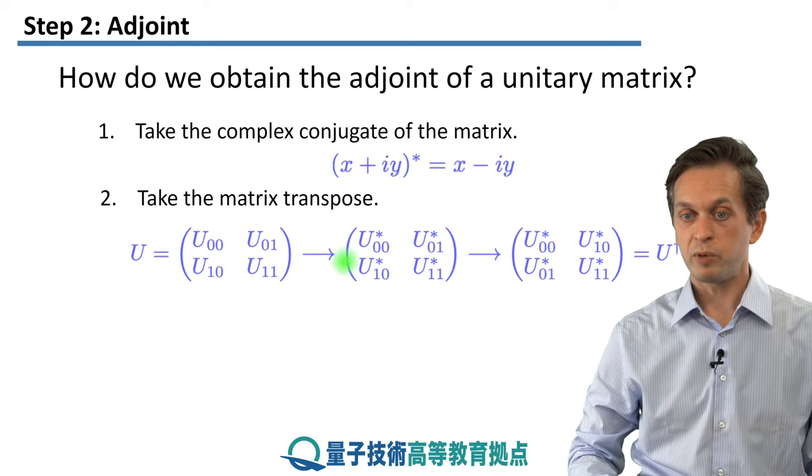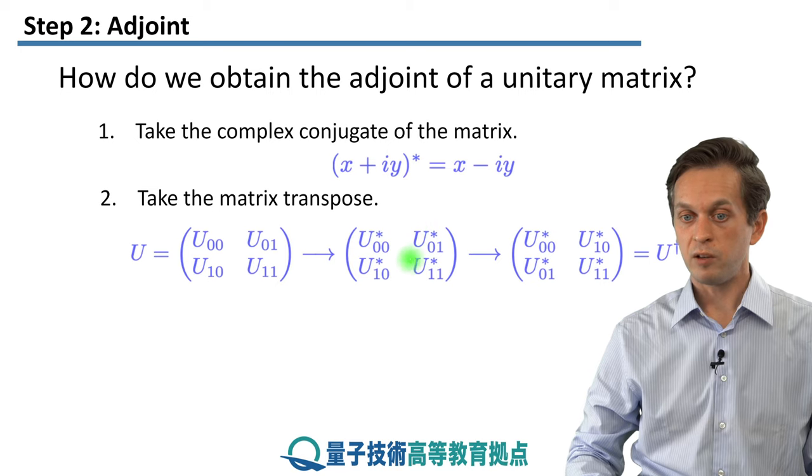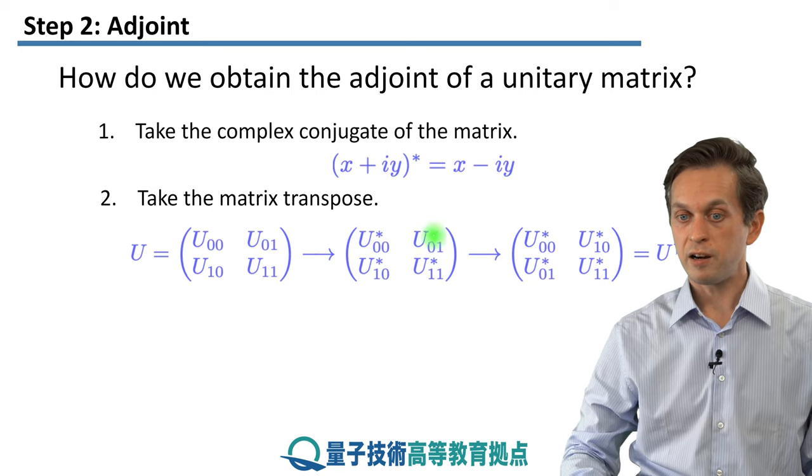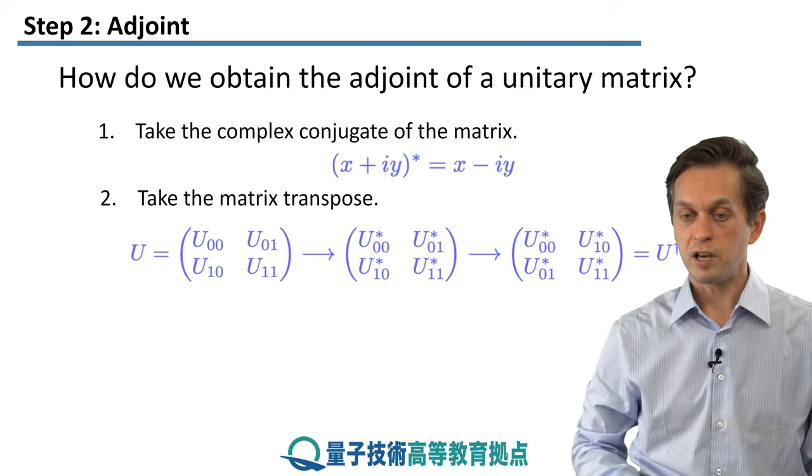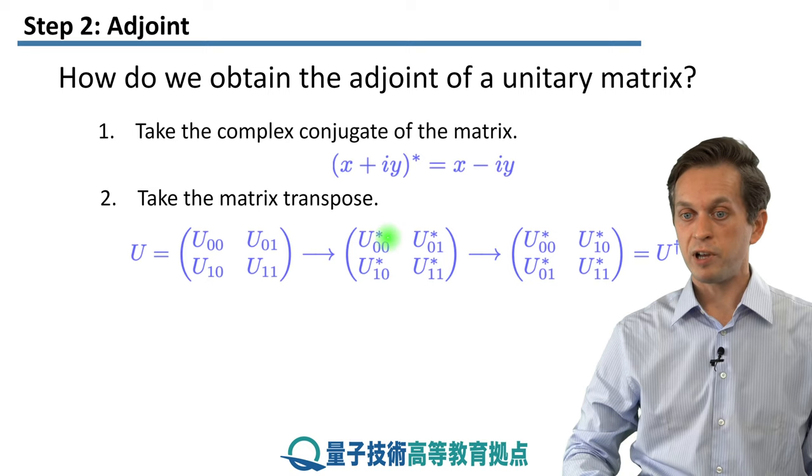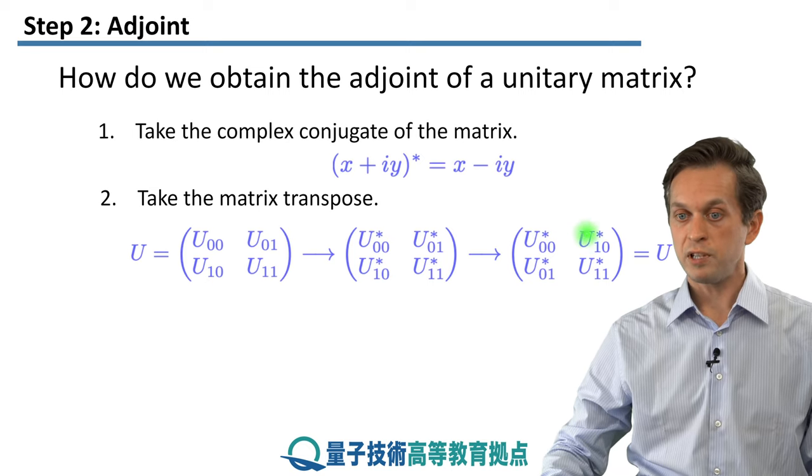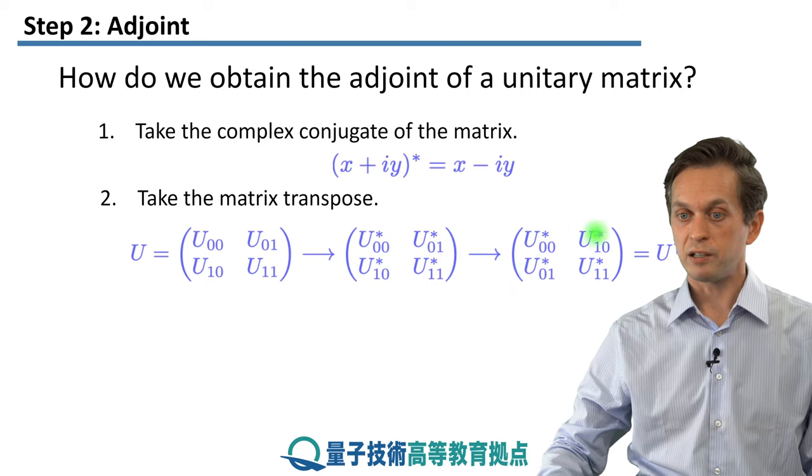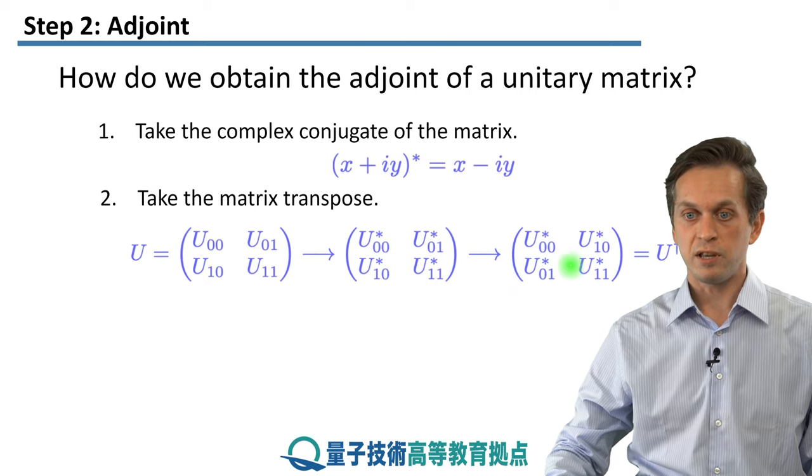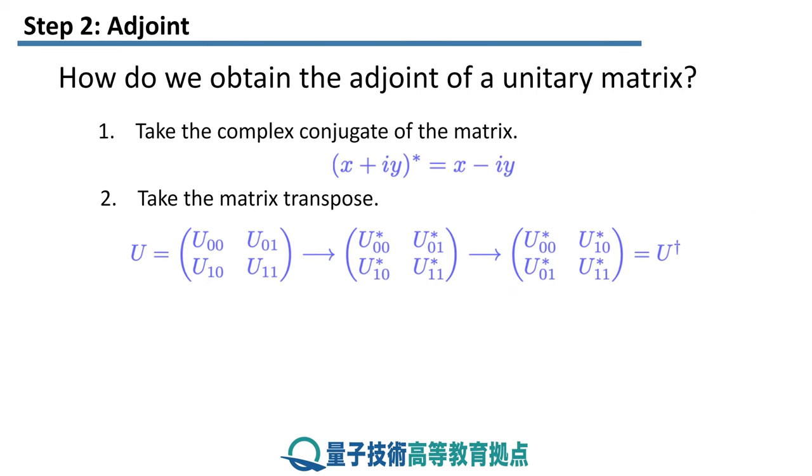So let's see how this unitary U actually turns into an adjoint. First, we apply the complex conjugation. So we take each element and we write this little star there, denoting that this element is complex conjugated. And then we apply the transpose. So you see that I have flipped these off-diagonal elements, but I have not touched the diagonal elements. And that's your U†, your adjoint operation.